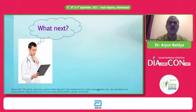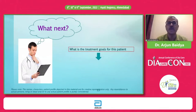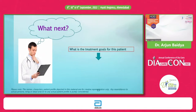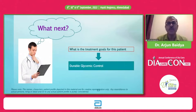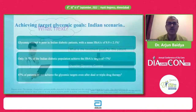Should we start with metformin alone, or a fixed-dose combination of metformin with an SGLT2 inhibitor or DPP-4 inhibitor? Or should we start with a DPP-4 inhibitor alone? We need to individualize. Our management goal should be long-term durability of glycemic control in a newly detected type 2 diabetes mellitus patient who is otherwise healthy, without comorbidities like hypertension, dyslipidemia, or obesity.